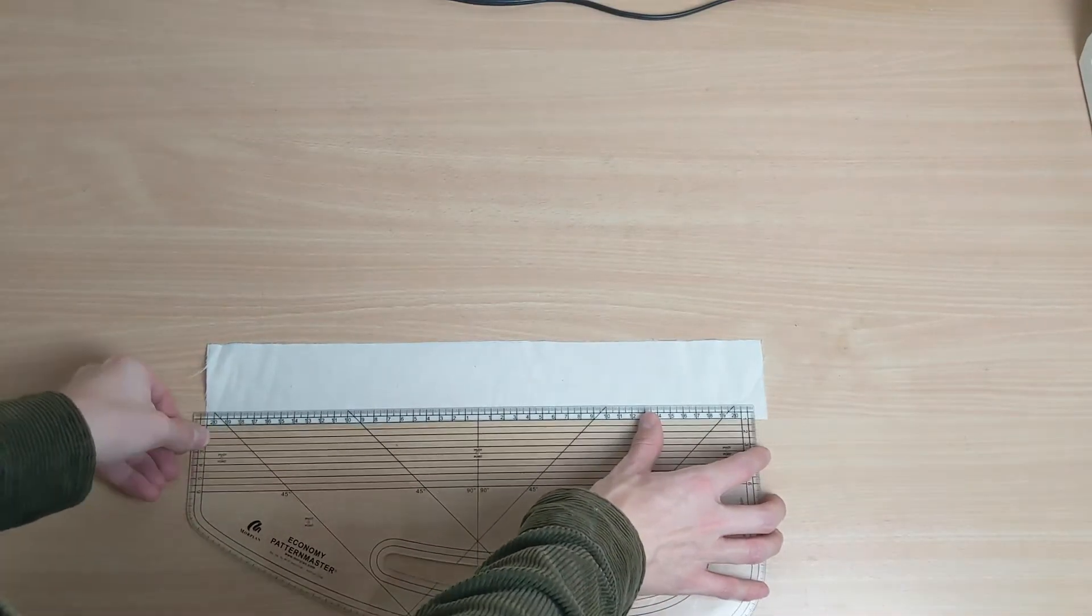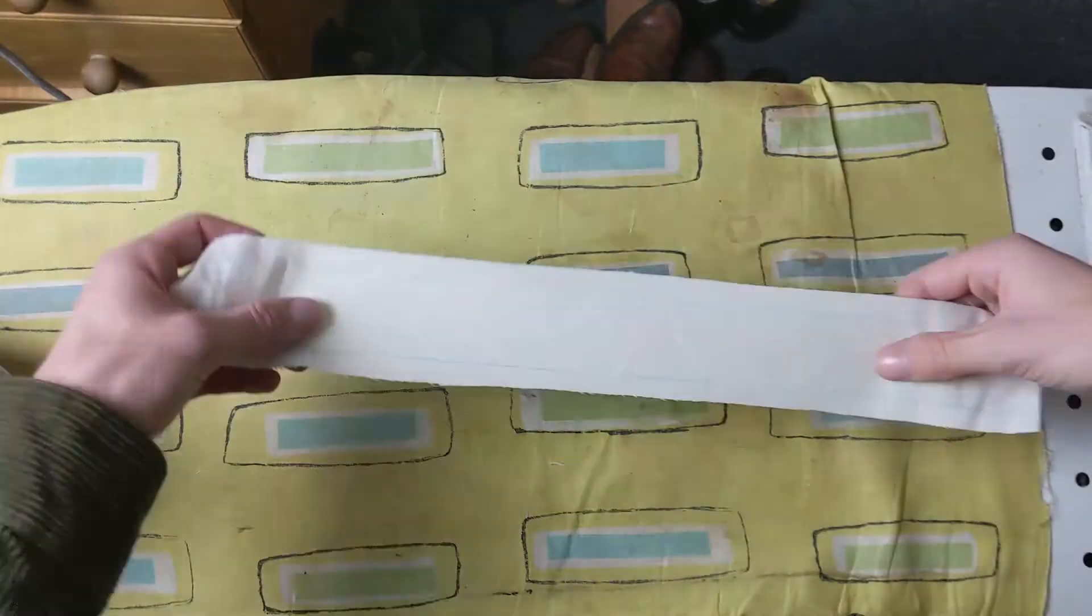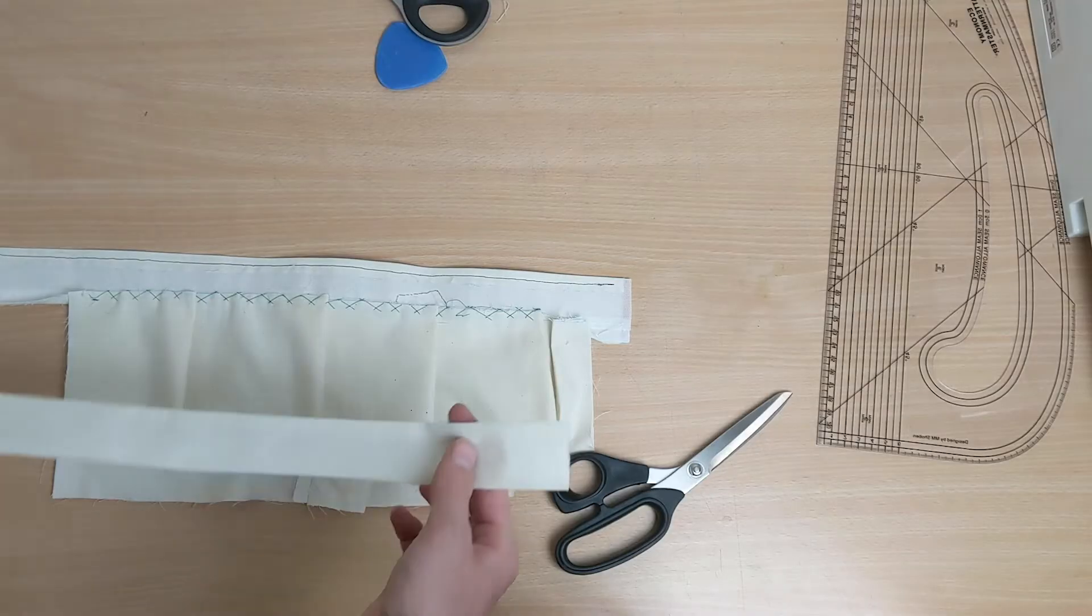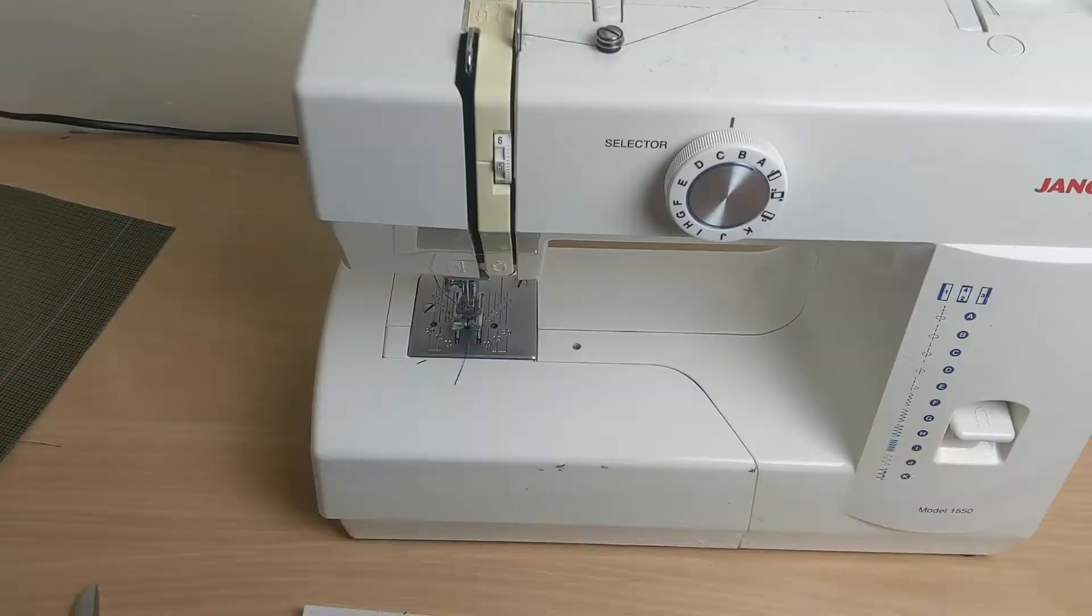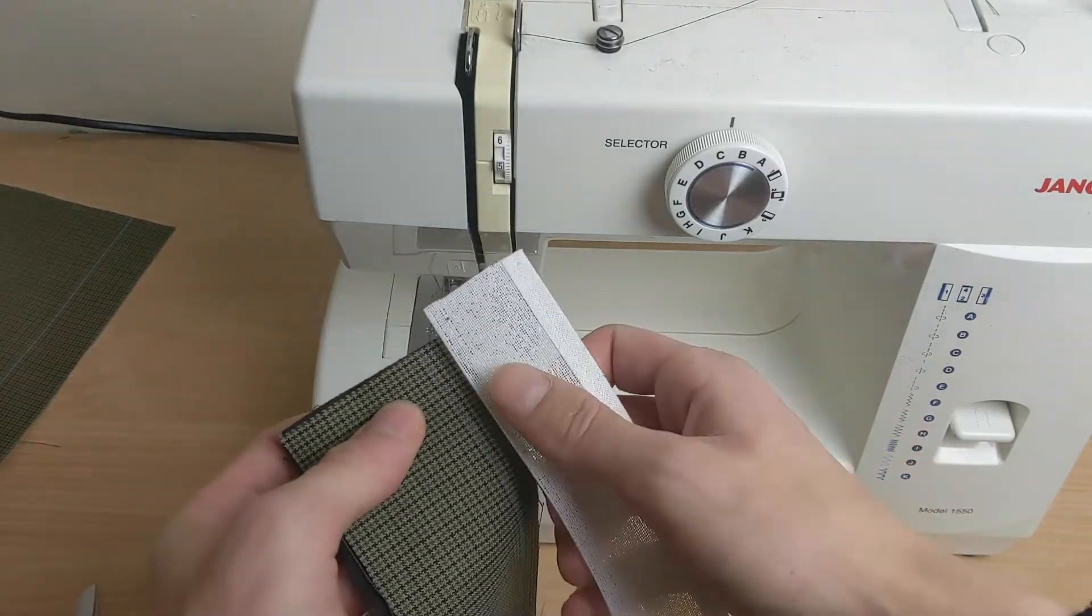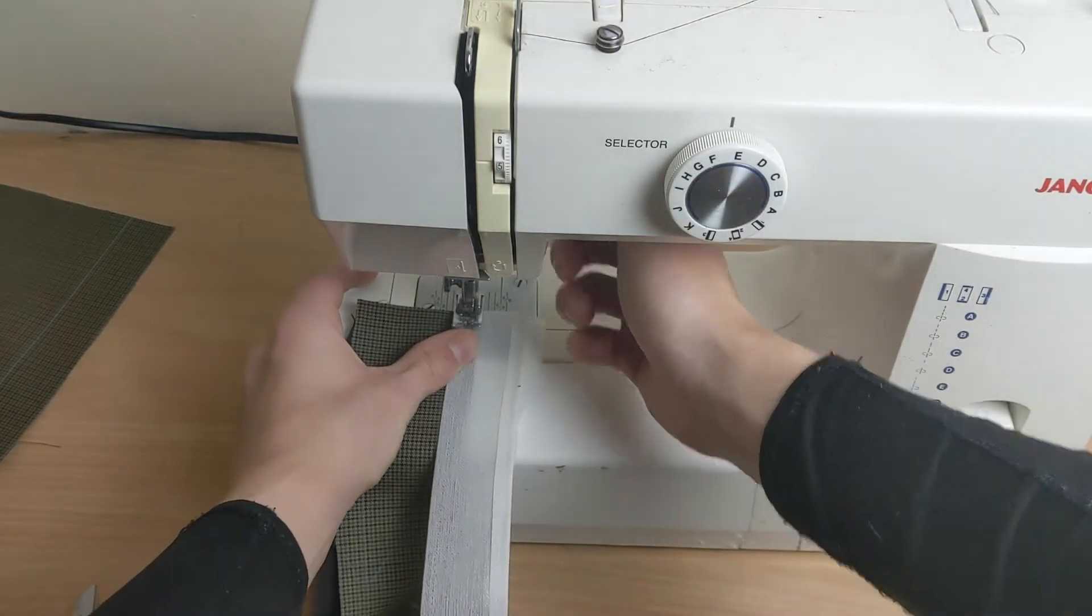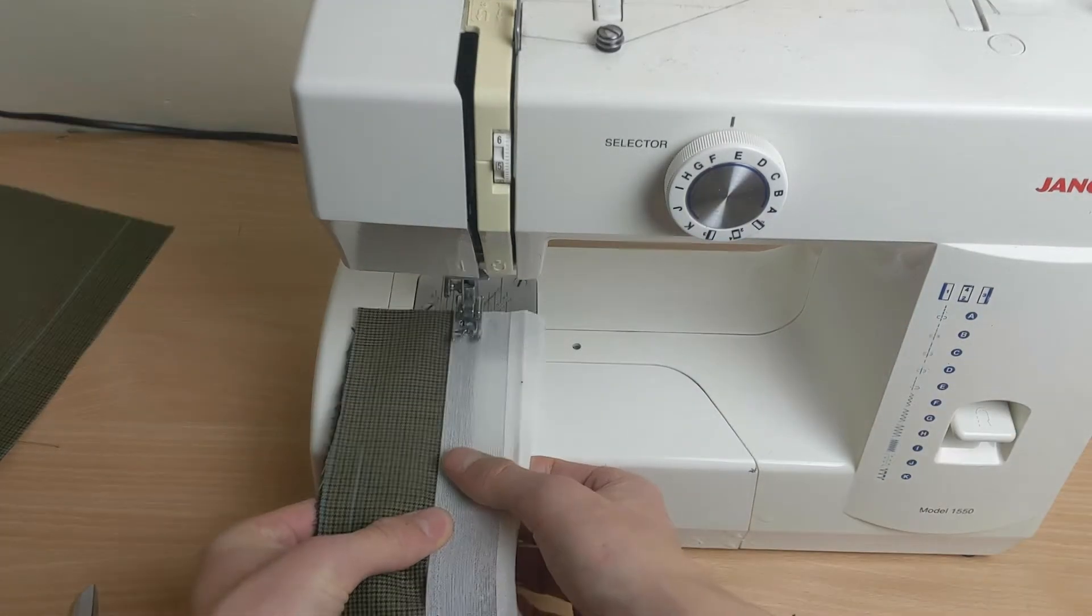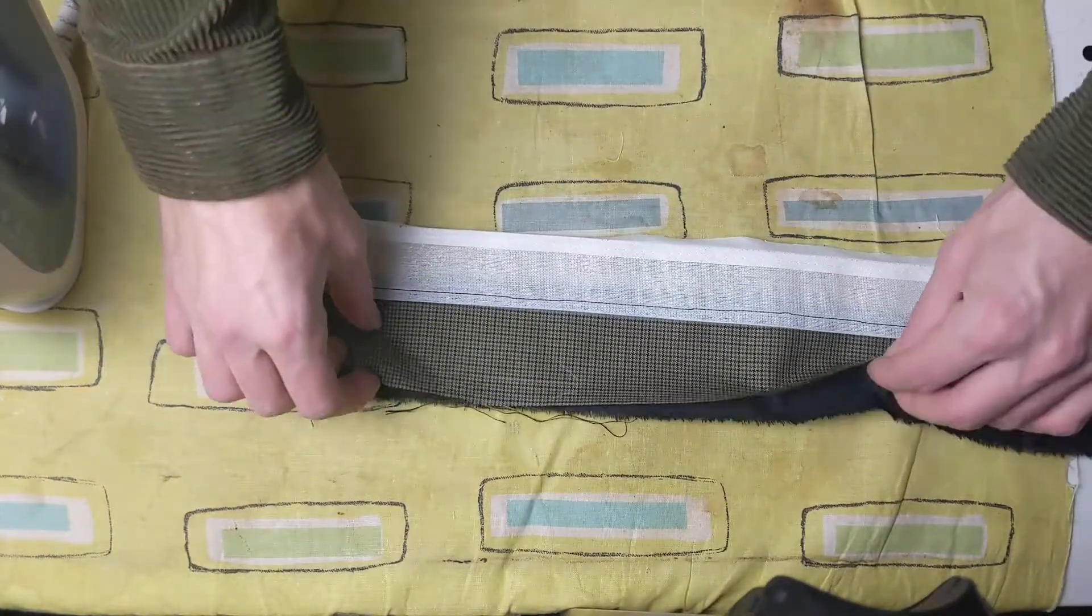To attach the waistband lining, press a one centimeter seam on both sides and baste it to the waistband, and we'll fell it. It's about this point that I realize this could be machined to the waistband at the same time that the waistband was being put together. You'd find yourself with problems if you wanted to attach belt loops, but you don't want belt loops—side tab adjusters will do fine. Machining though would save you about half an hour of felling.